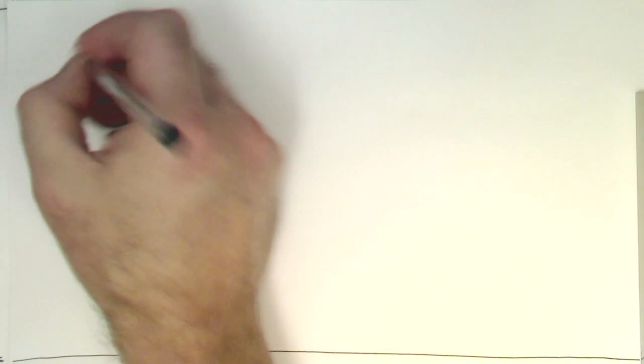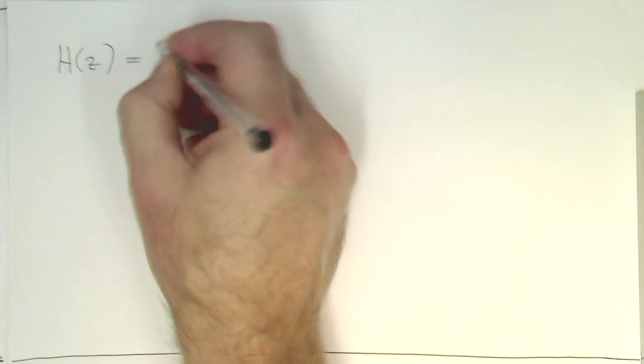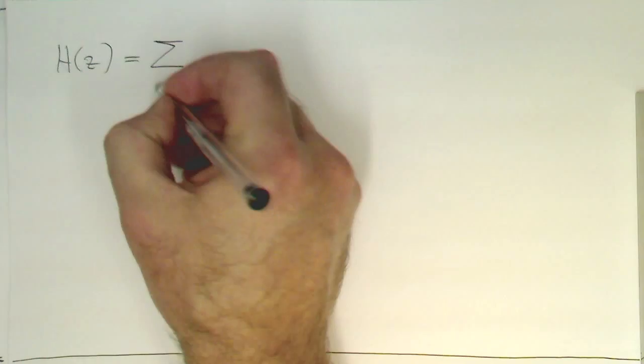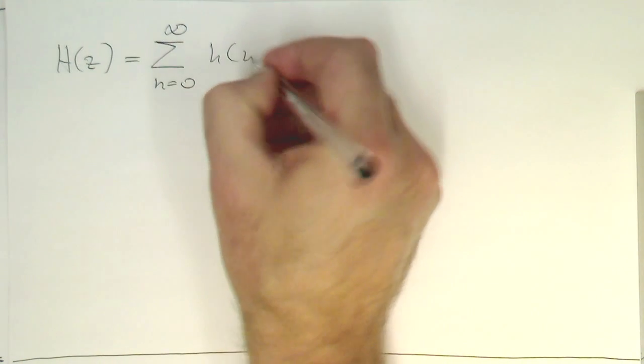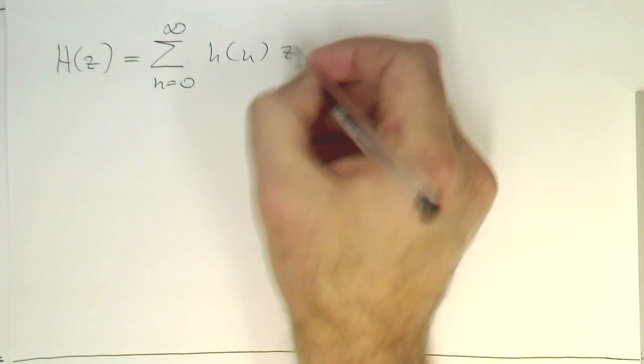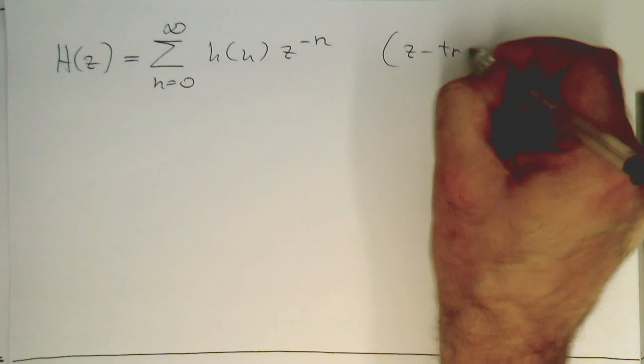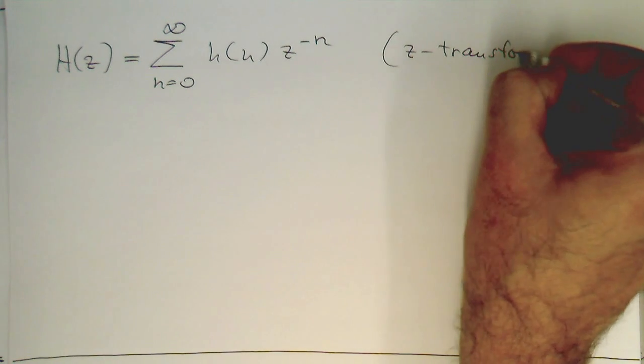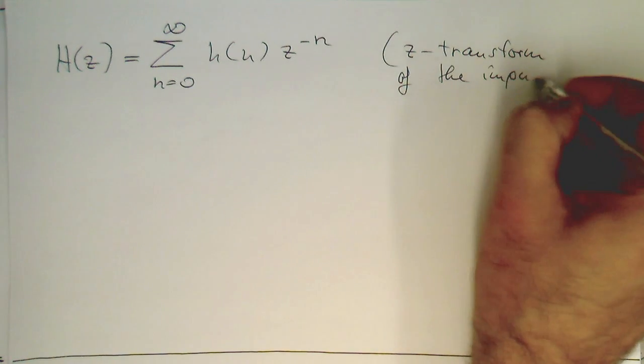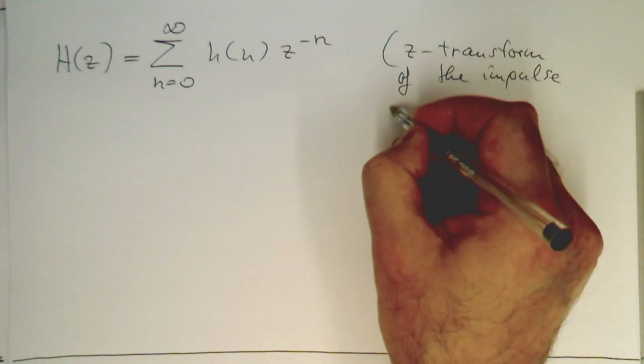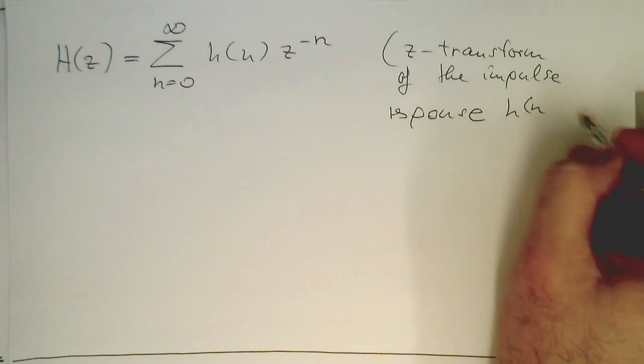We define our H(z) with the help of the Z-transform. So this was H(n) multiplied by z to minus n. That's our Z-transform of the impulse response H(n).